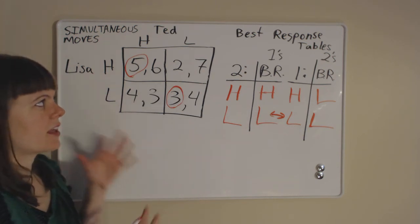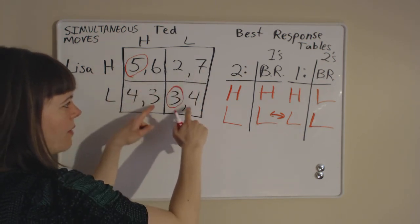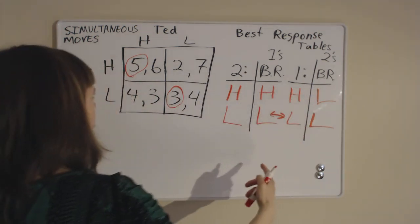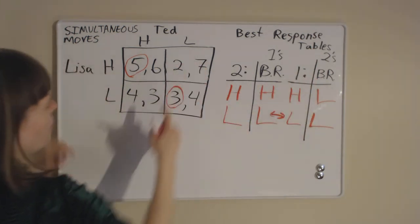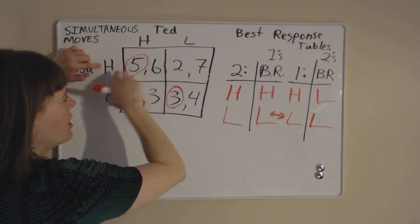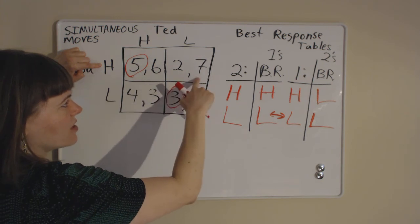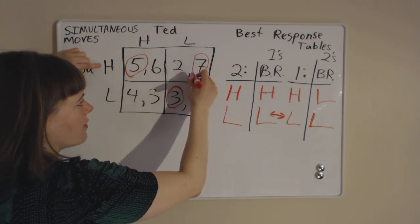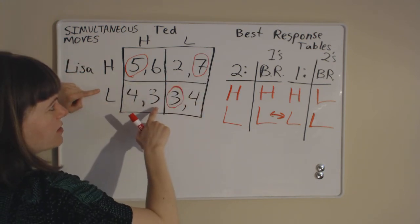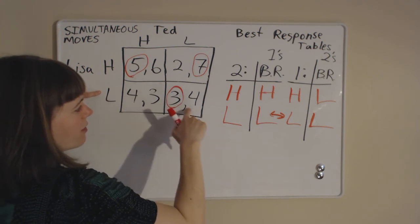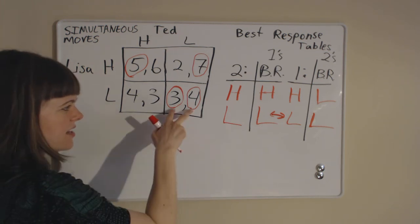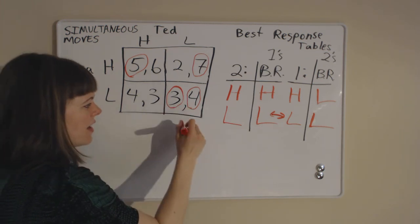Now we switch to Ted's perspective — the second payoff in each box is the relevant one. Ted says: if Lisa goes high, what will I wish I would have done? He's either going to get a six or a seven, and he would have wished he'd gotten the seven, so he circles that. If Lisa goes low, Ted is choosing between the three and the four, and he circles the four. After doing this, any time you have two circles in the same box, you have a Nash equilibrium.